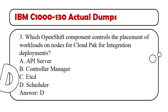Question 3. Which OpenShift component controls the placement of workloads on nodes for Cloud Pak for Integration deployments? A. API server. B. Controller manager. C. ETCD.